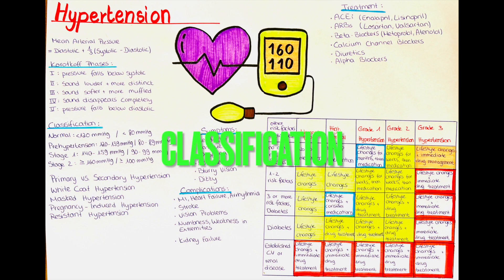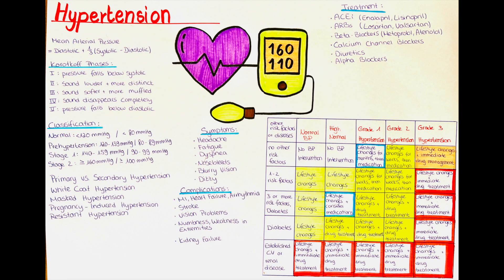How do we classify hypertension? Hypertension is classified into different stages based on the blood pressure readings. The stages are first normal: the systolic pressure is below 120 mmHg and the diastolic pressure is below 80 mmHg. In the pre-hypertension stage, the systolic pressure is between 120 and 139 mmHg and the diastolic pressure is between 80 and 89 mmHg.